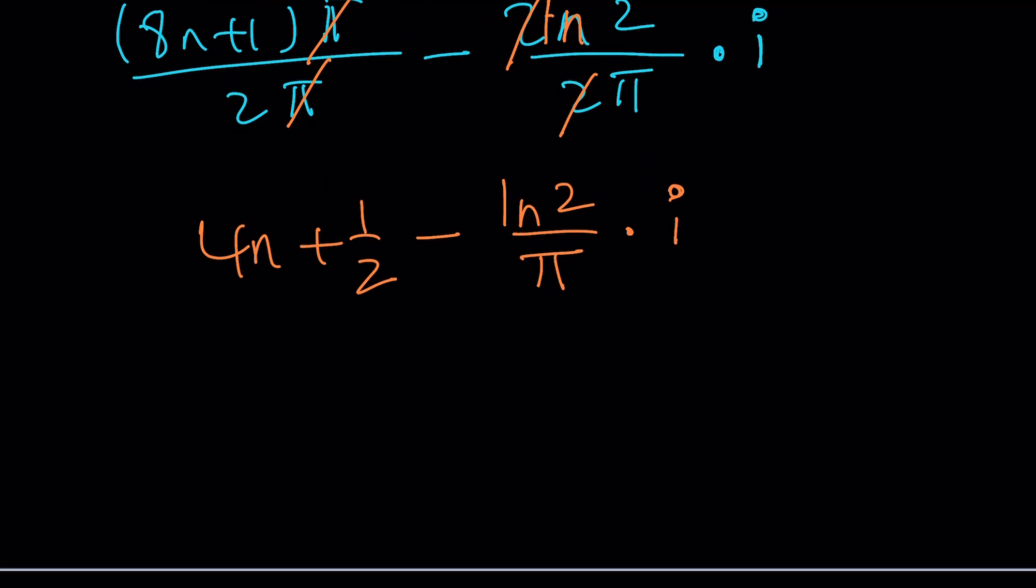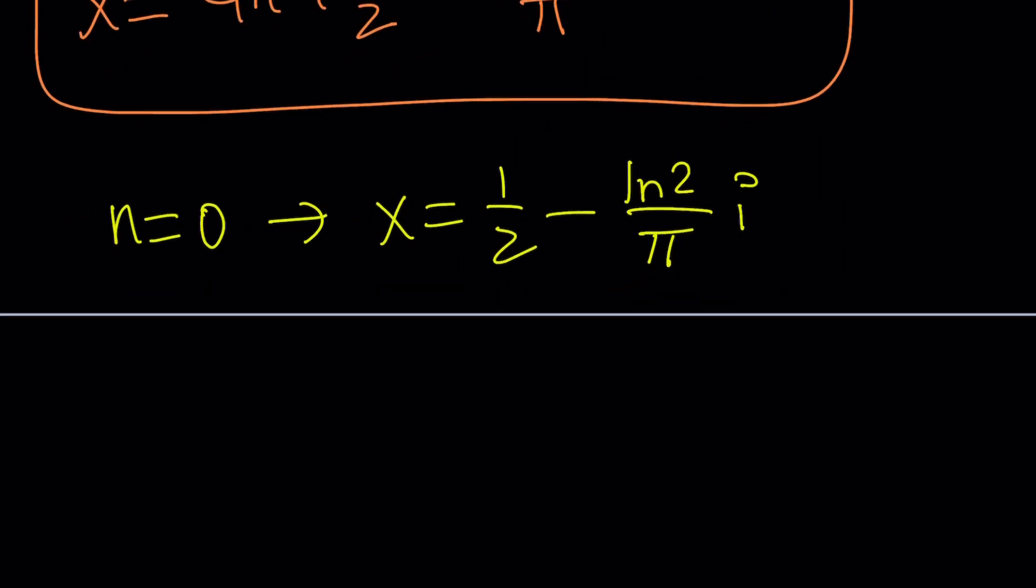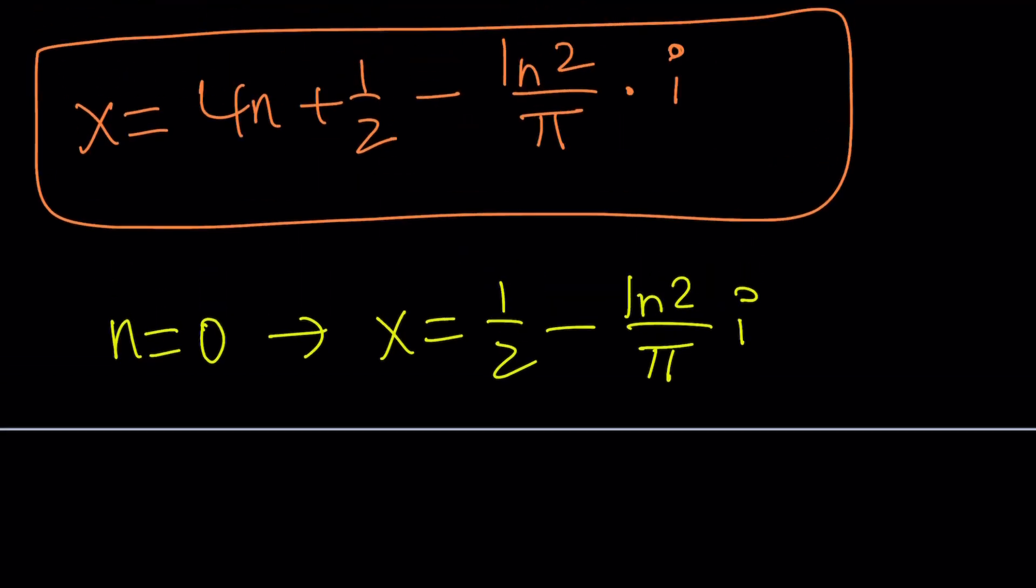And now if you go ahead and plug this in for x, you're going to notice that you'll get the answer. Let me show you real quick what happens when n is a special value like n equals 0. You're going to get x equals 1 half minus ln 2 over pi i. Now if you go ahead and raise i to the power of that, does that give you the answer? It should. You can test it out. And also check the result with Wolfram Alpha.